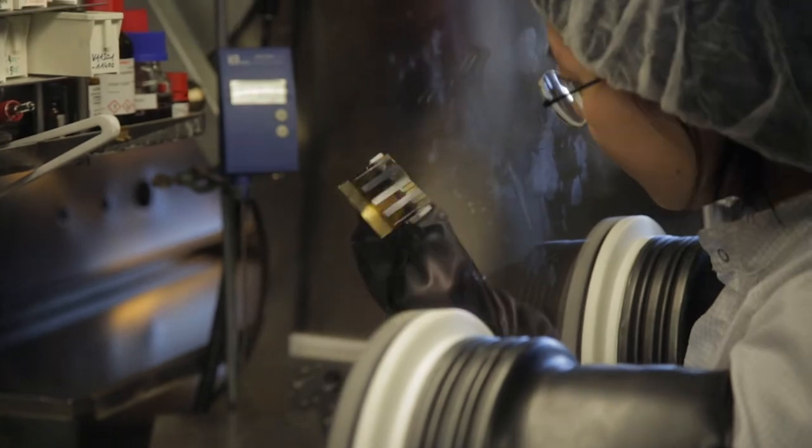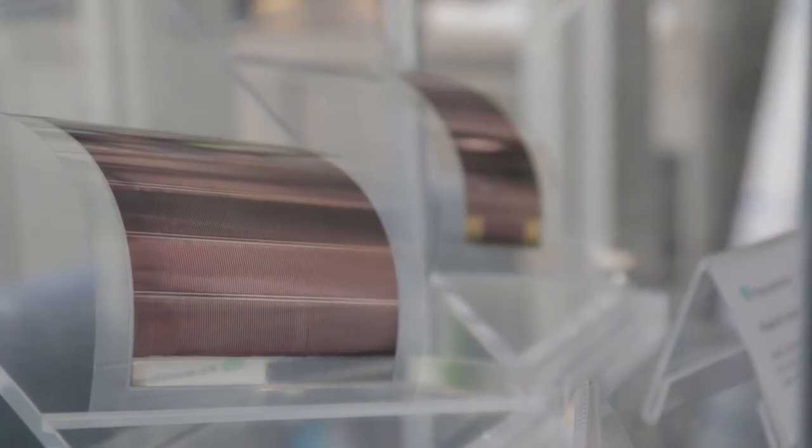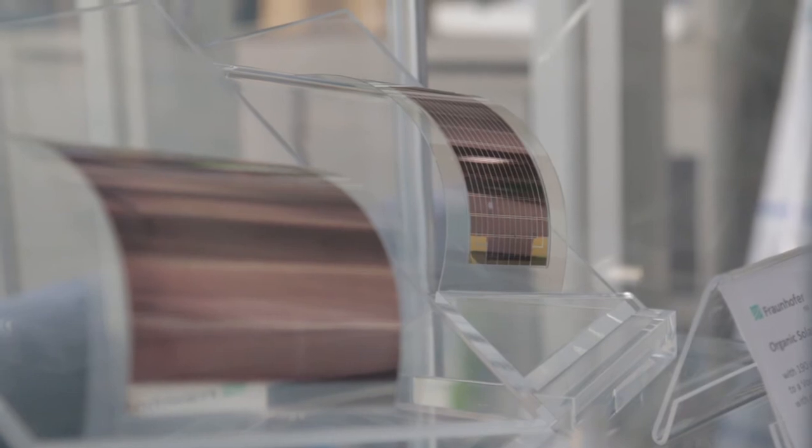This is an organic solar module and the difference is that the photoactive layer is composed of organic materials. They can be processed from solution at room temperature which allows you to use plastic substrates.